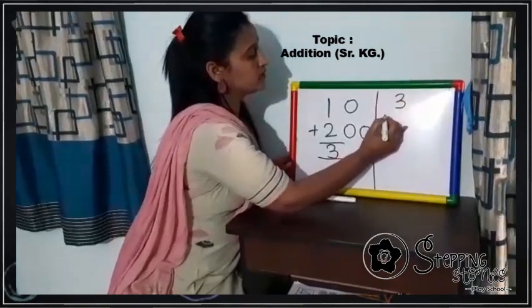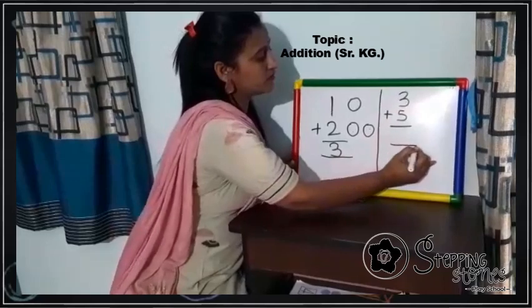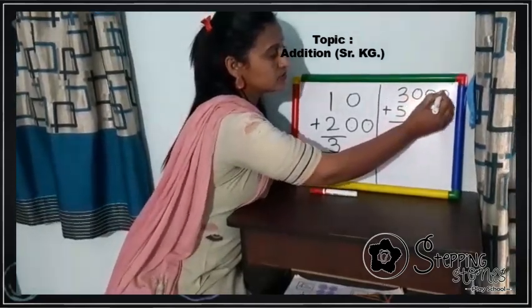3 plus 5. We will make 3 circles. 1, 2, 3.